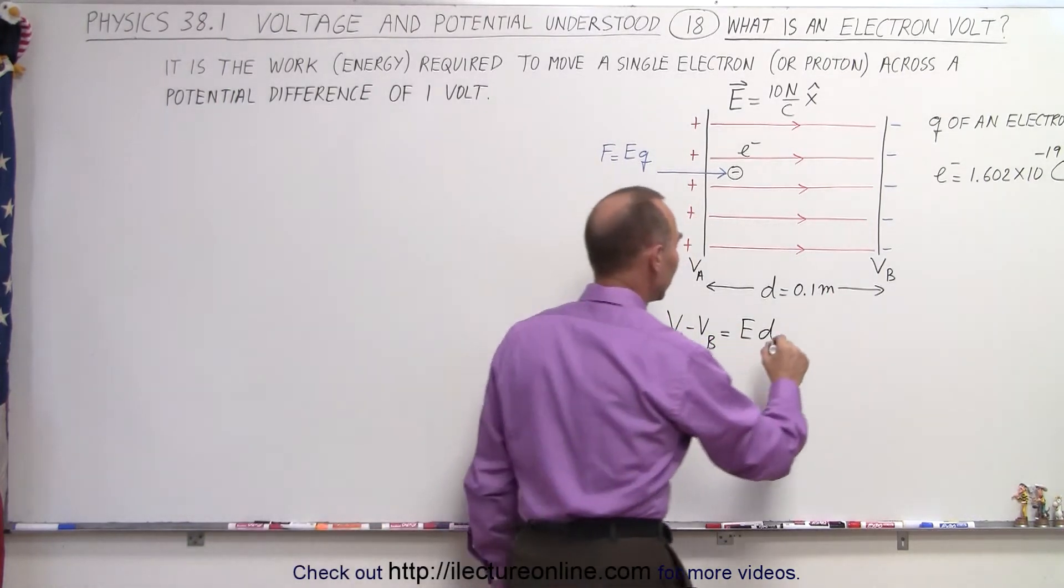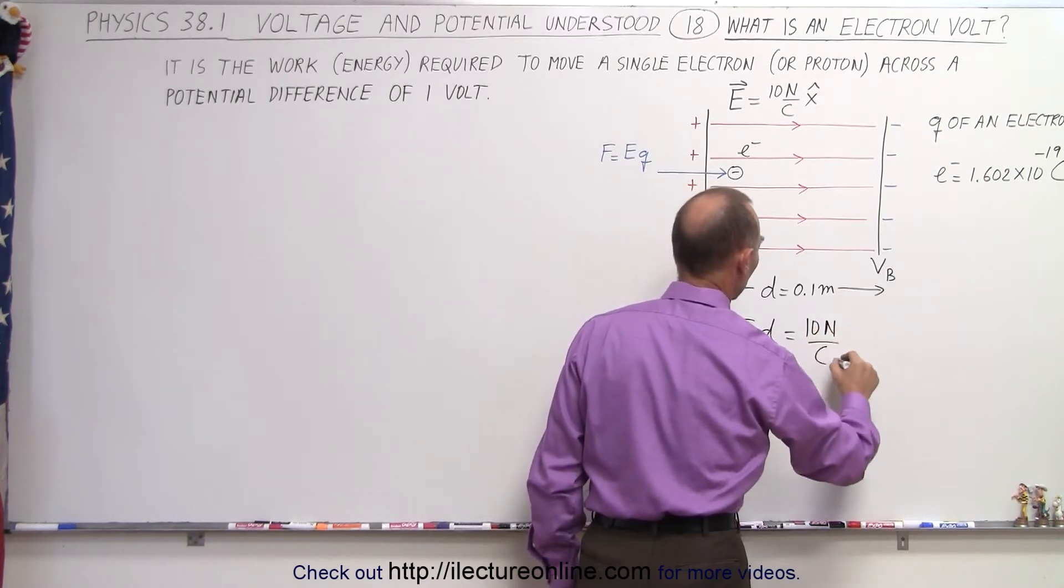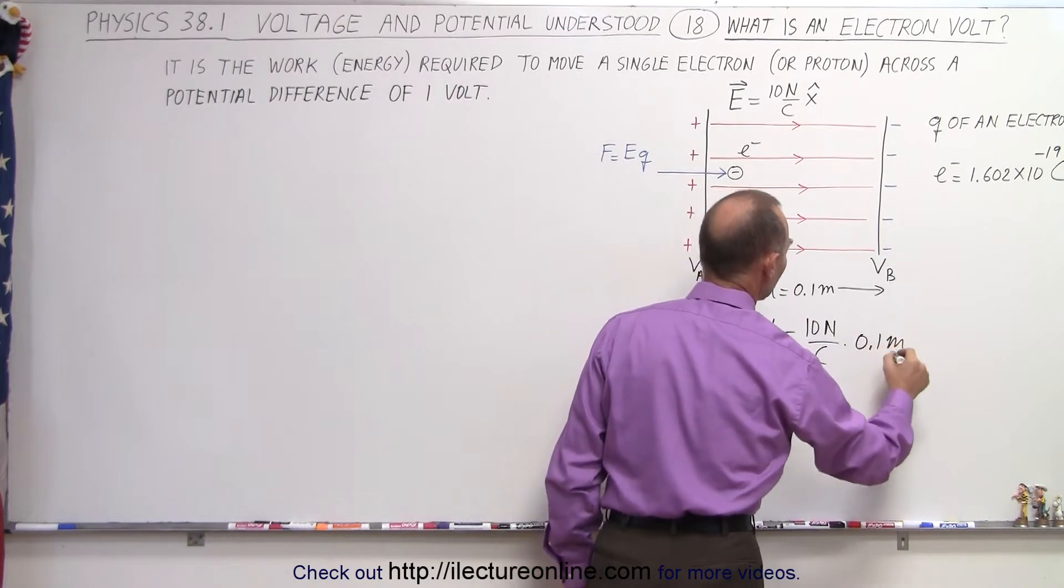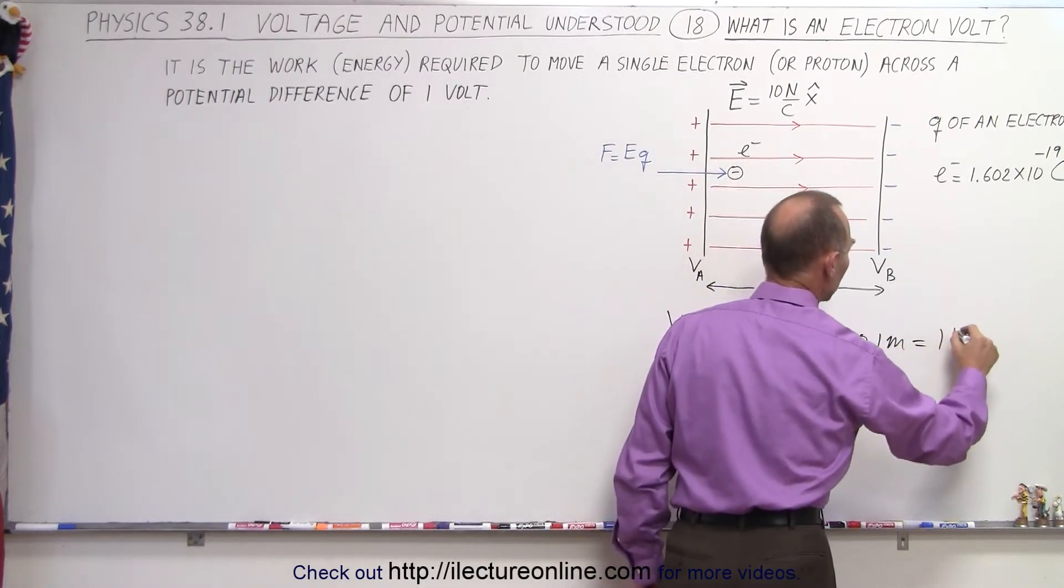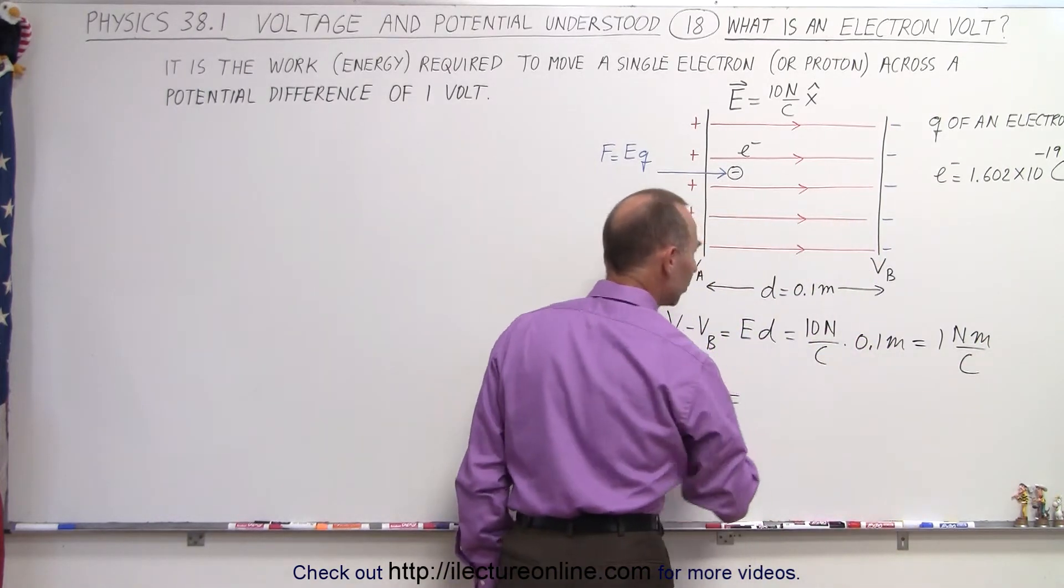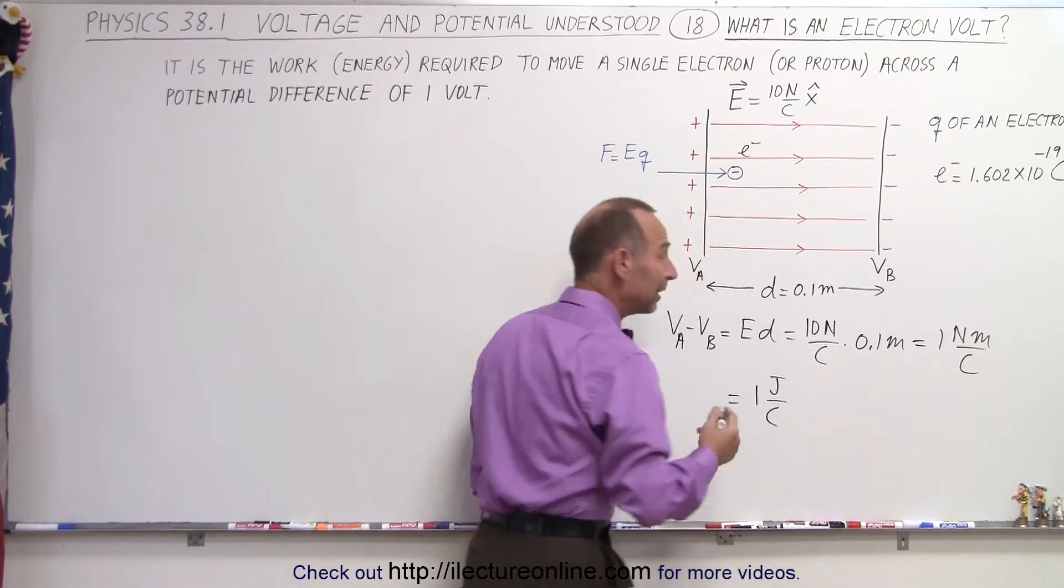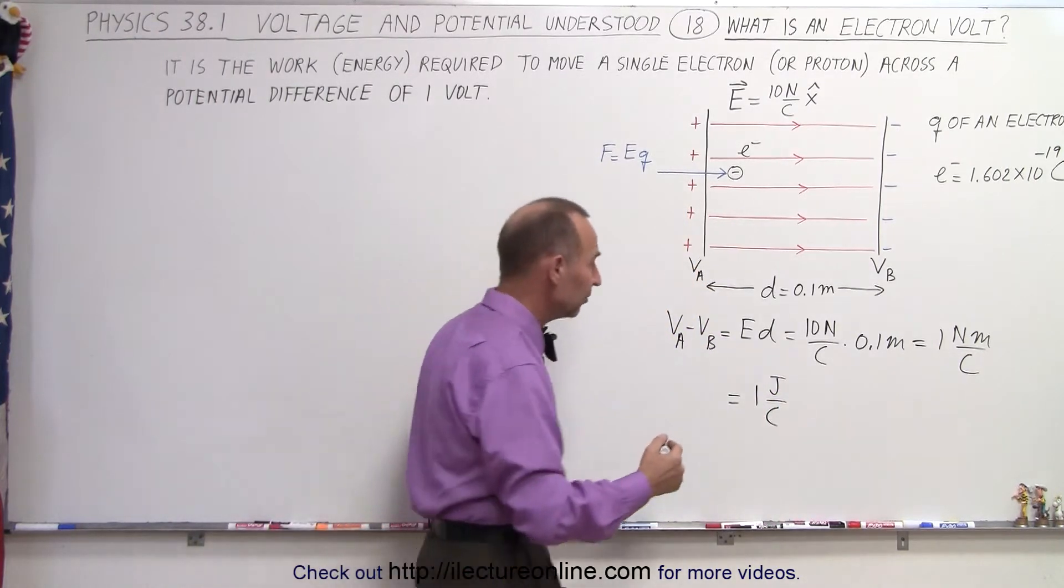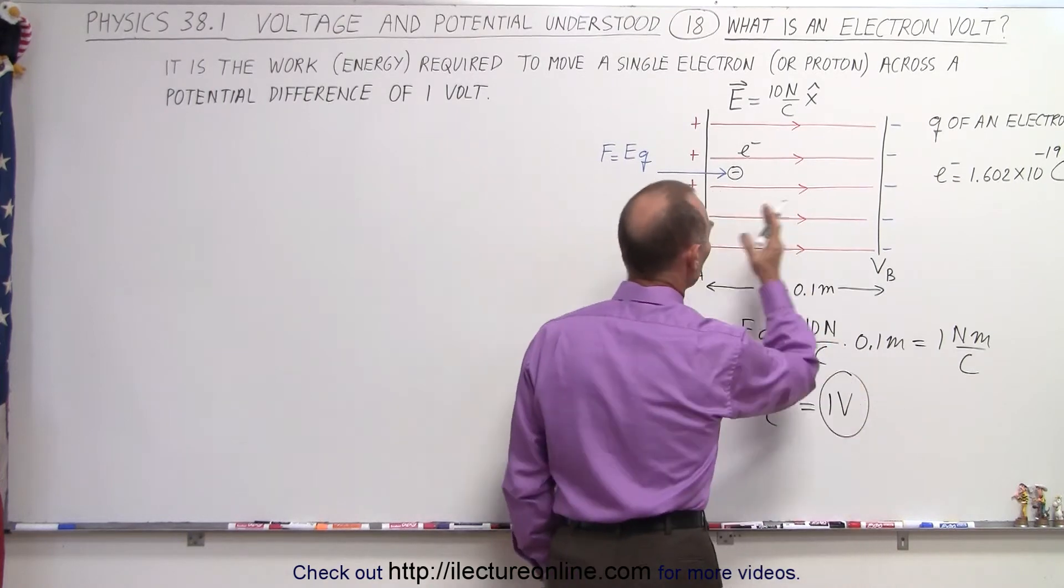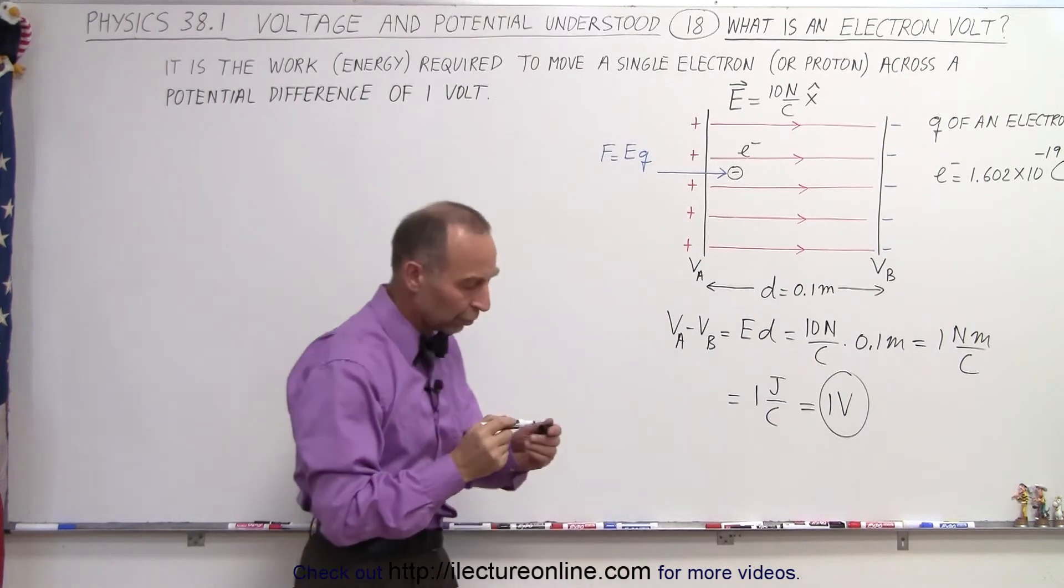So in this case that's going to be equal to 10 newtons per coulomb times 0.1 meters, which is equal to 1 newton meter per coulomb. And of course that would be equal to 1 joule per coulomb, and by definition a joule per coulomb is indeed 1 volt. So you can see that we have a setup here where the difference in potential from A to B is exactly 1 volt.